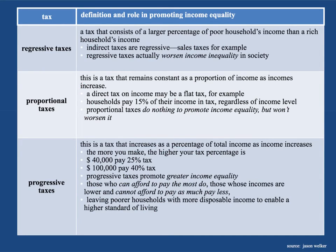That's the logic behind progressive taxes. Because it taxes the first $50,000 less, it's saying that is the most important money one needs to survive and maintain a basic standard of living. Anything after that is extra, so you get taxed at a higher rate because it's less critical to the standard of living that the government is trying to target.